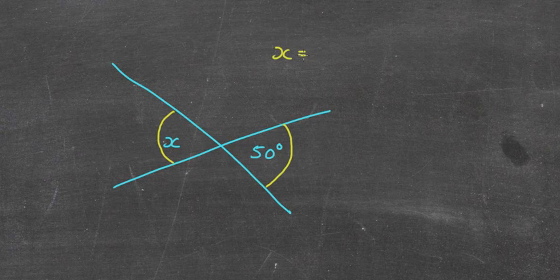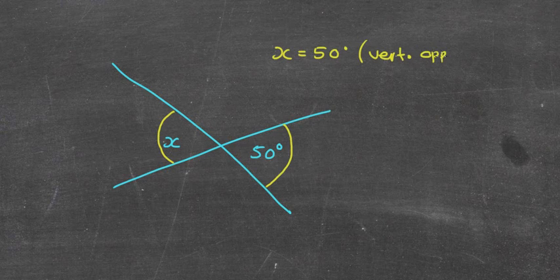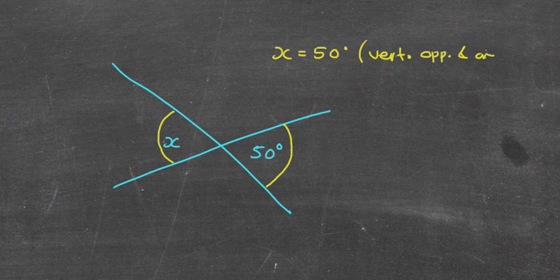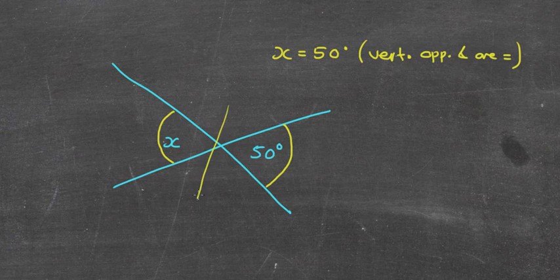And that's actually very true. We can simply write in this particular instance, x is equal to 50 degrees. And your reasoning would be vertically opposite angles are equal. And that's your ruling. And guess what? That's job done. You know, that's simply your answer. Likewise, you know, these two angles here would also be equal.